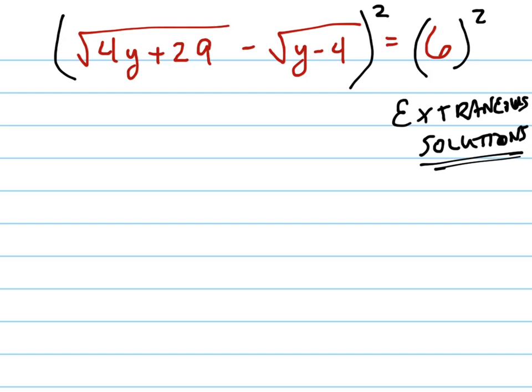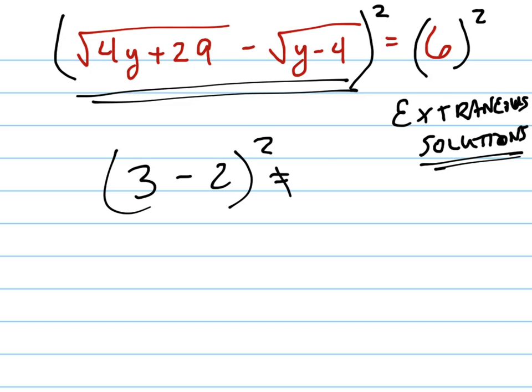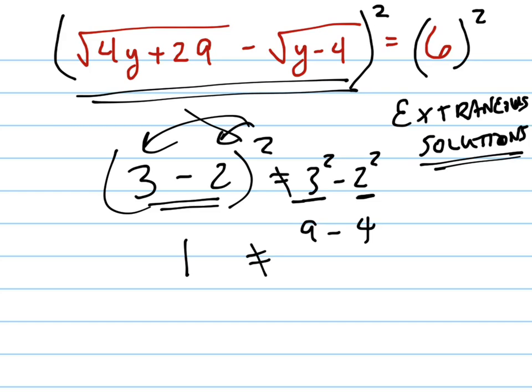So the other big pitfall people do a lot of times is when they square this right here, they forget that you can't just take, let me give you a simple example. 3 minus 2 squared does not equal 3 squared minus 2 squared. Obviously 3 minus 2 is 1, and 1 squared is 1, but 3 squared is 9, and 2 squared is 4, so 1 does not equal 9 minus 4. You can't just distribute that in, that's a no-no.